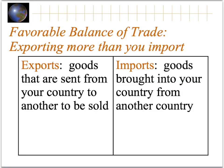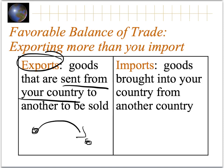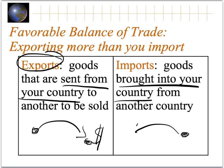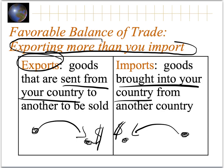Let's talk about two words we need to understand for how a global economy works. First, an export is something that is sent from my country — if I make something here, I can send it over there and they have to pay me money for it. An import is something that is brought into my country — it came from somewhere else and I have to pay money for it. In order to make money in an economy, you want to be exporting more than you are importing. That's called the favorable balance of trade.